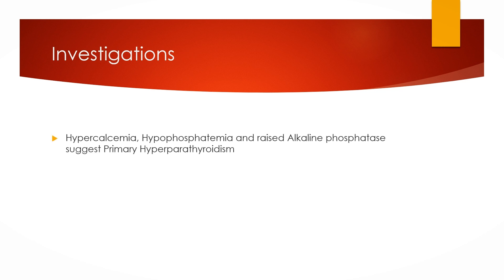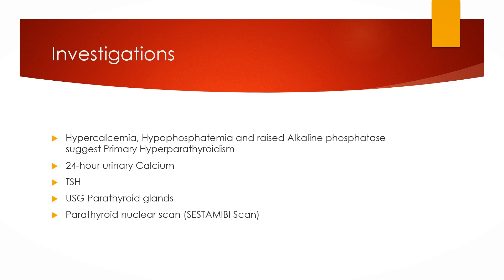Coming on to investigations: hypercalcemia, hyperphosphatemia, and raised alkaline phosphatase suggest primary hyperparathyroidism, but in cases of secondary hyperparathyroidism you will find hypocalcemia. Since hypercalcemia and raised PTH may also be found in cases of familial hypocalciuric hypercalcemia, a 24-hour urinary calcium test is important to differentiate between these two conditions. TSH should also be tested for hyperthyroidism. Ultrasound of the parathyroid glands will help in diagnosis by locating parathyroid adenoma, or parathyroid nuclear scans like Sestamibi scan can be done for the location of adenoma.